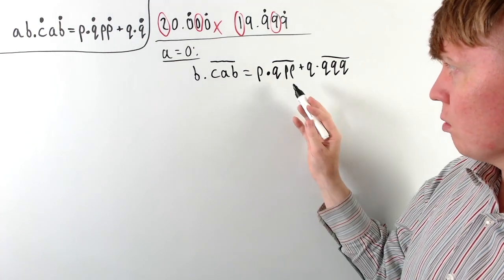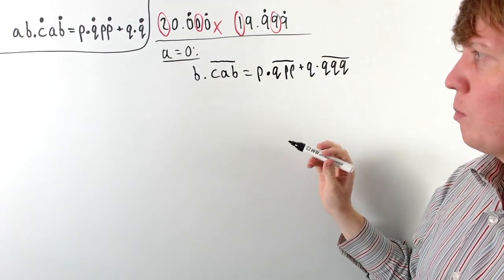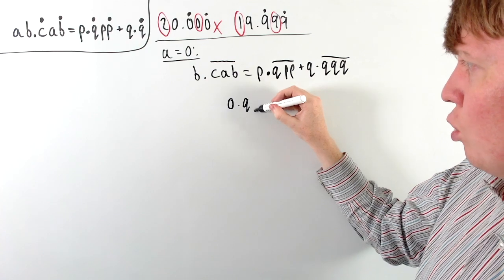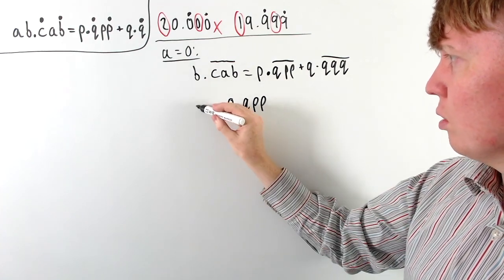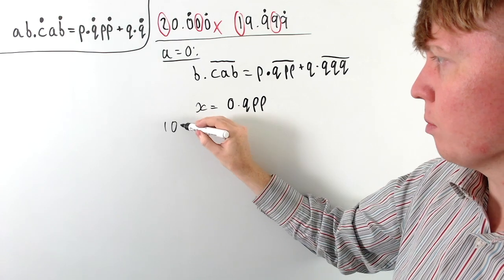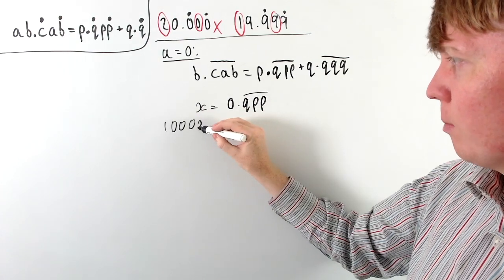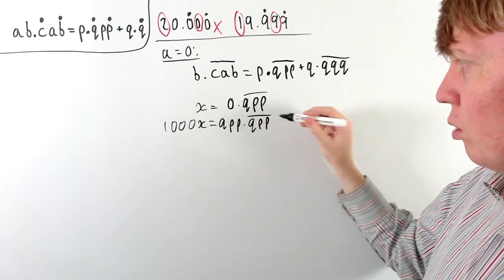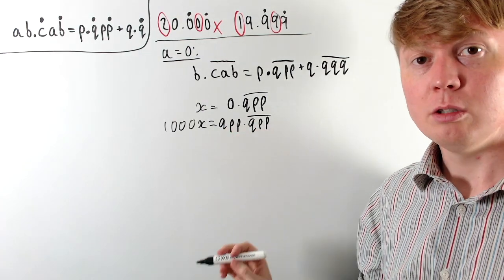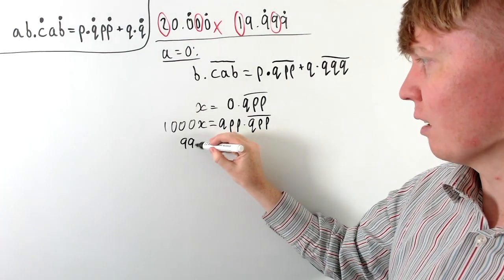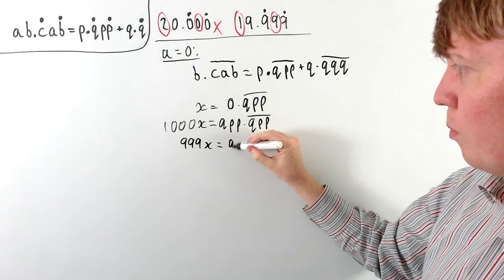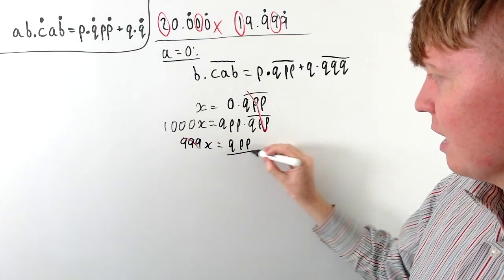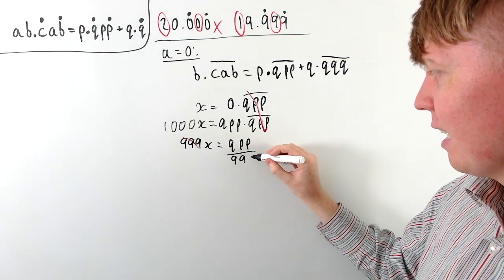At this point, we can start to understand what's going on with the recurring digits part. For example, if we had 0.qpp recurring, call this x, the standard trick is to multiply by 1000, giving qpp.qpp recurring. Then subtract one from the other: 999x equals qpp, so x equals qpp over 999. You can do something very similar for 0.cab recurring and 0.qqq recurring.